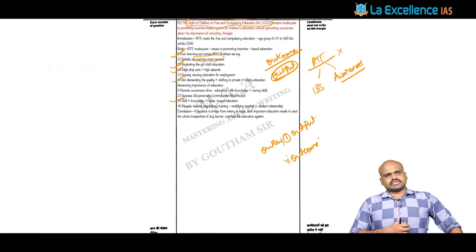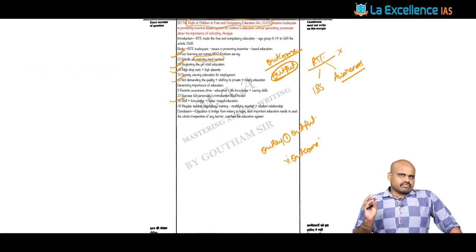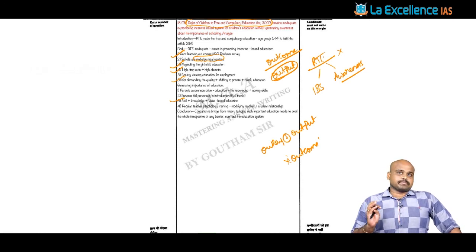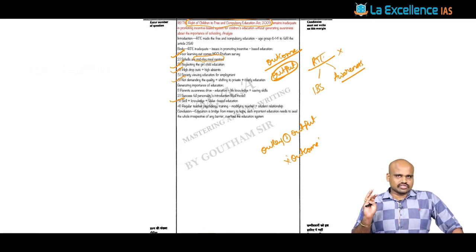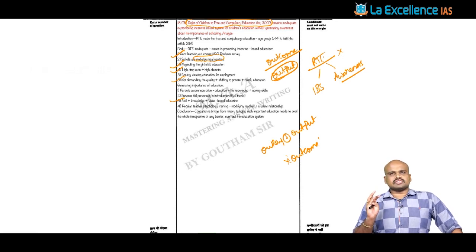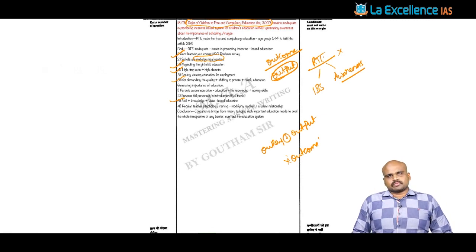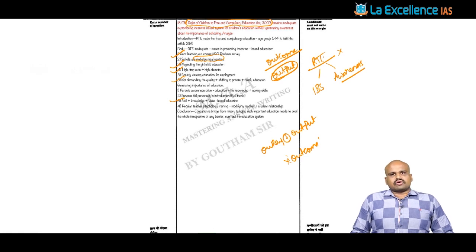This is regarding society and governance. Looking at the general trend of these questions, they are current affairs-based, drawing from major recent debates. A very important component of governance and social justice is evaluation, analysis, and examination of various schemes and policies, as well as the status of different sections of society. That is all for social justice and governance — thank you.